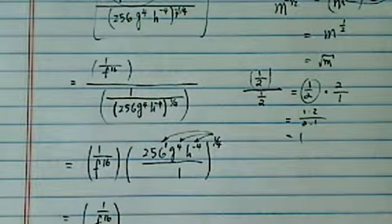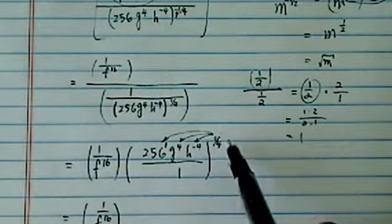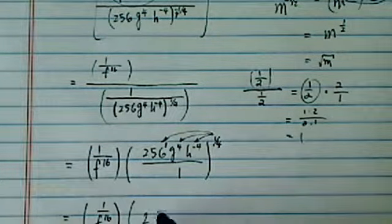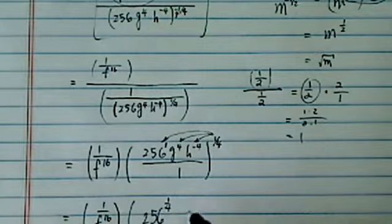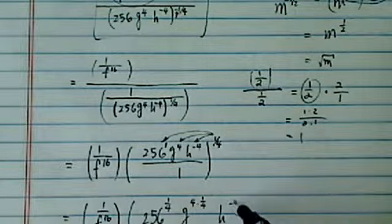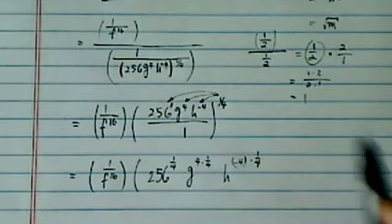Think of it as, you know, those catty fights girls have. So this quarter, you've got to go fight with each one of them. So you have 256 to the quarter, g to the 4 times a quarter, h to the minus 4 times a quarter as well.